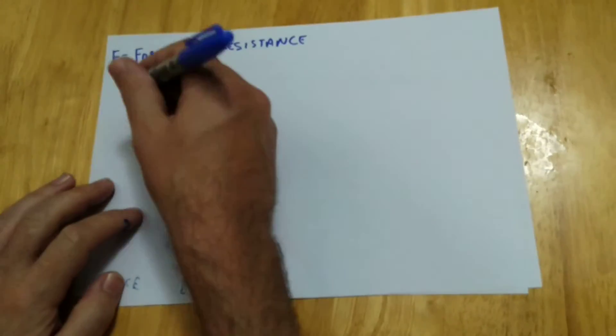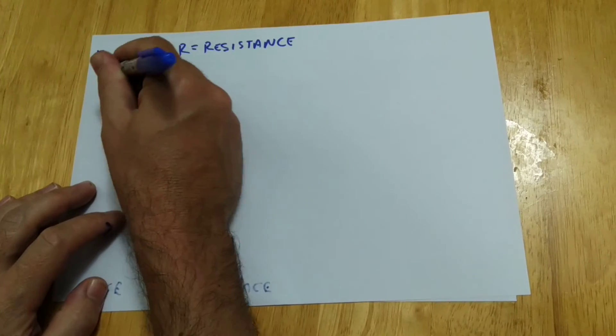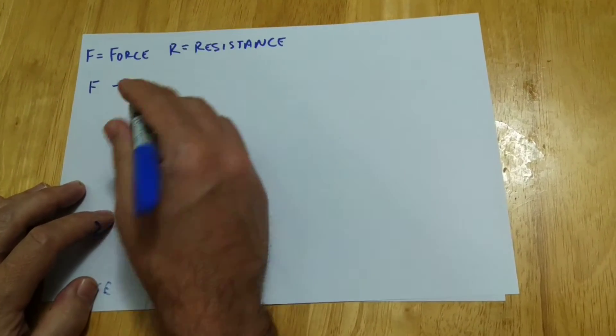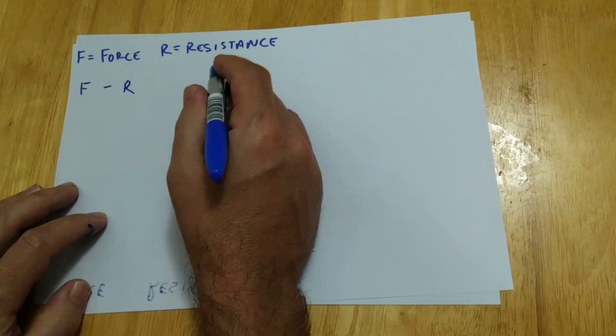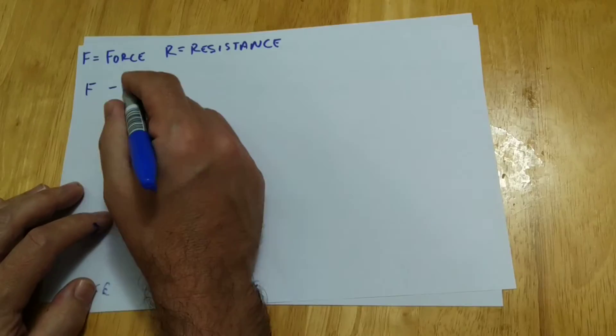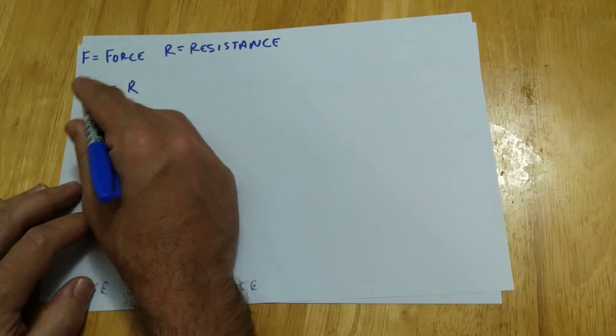But force and resistance, so F minus R, where R is resistance denoted by R, and F is force denoted by F.